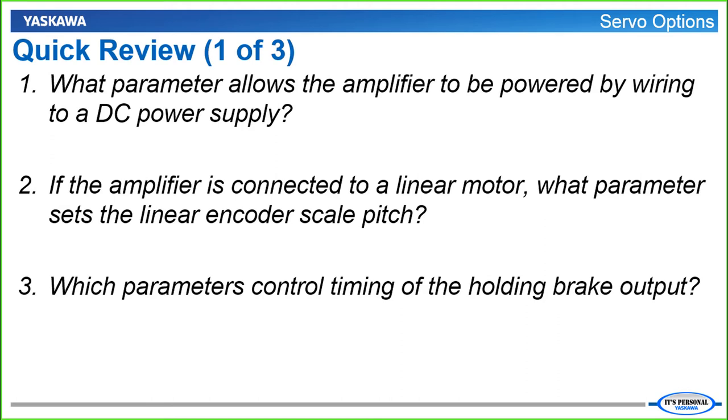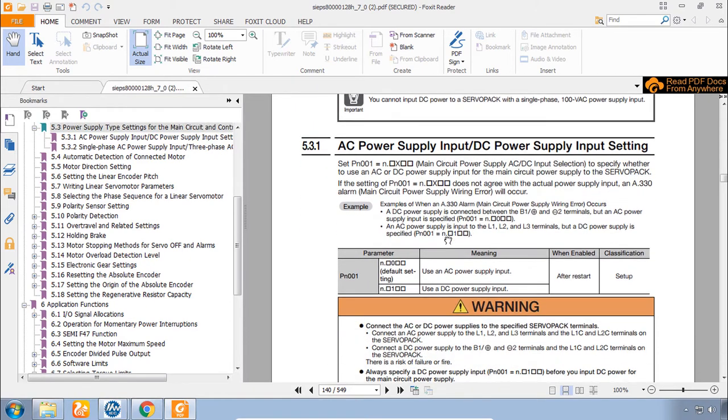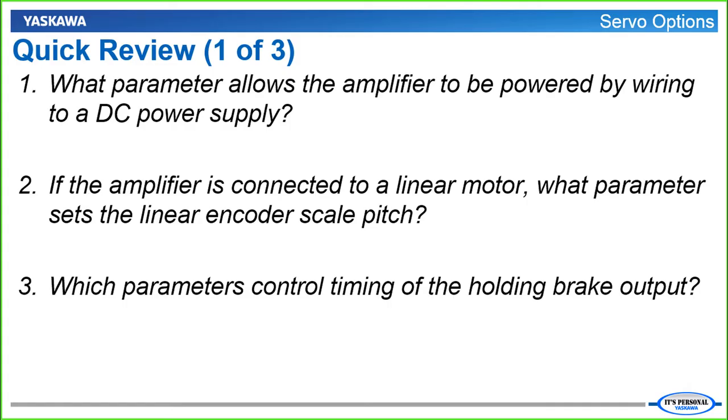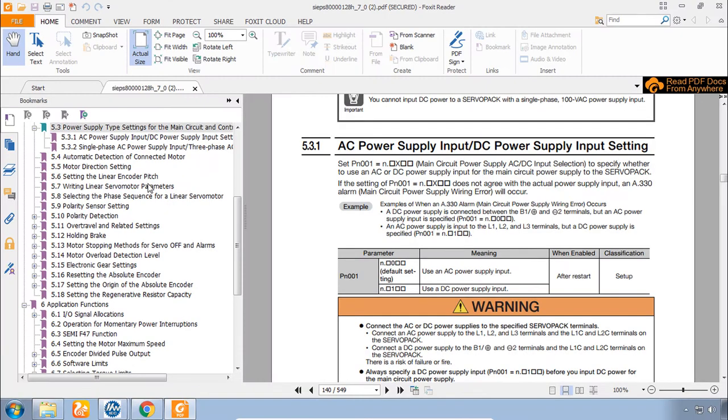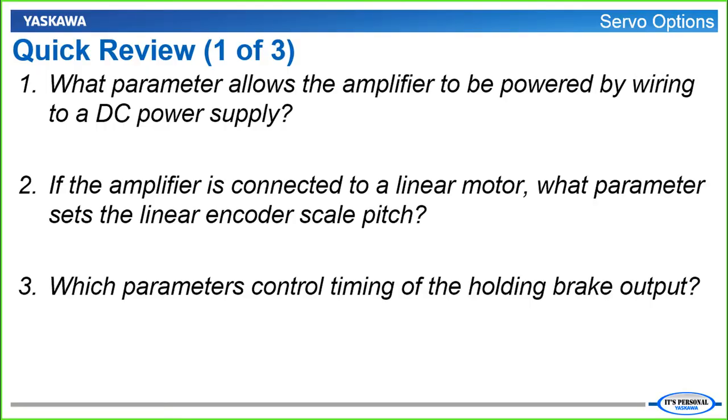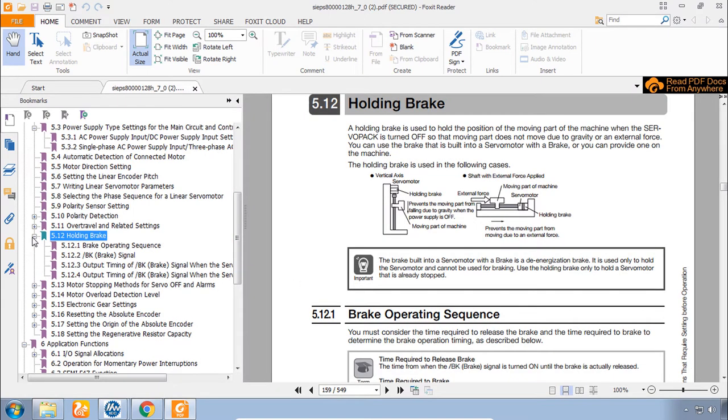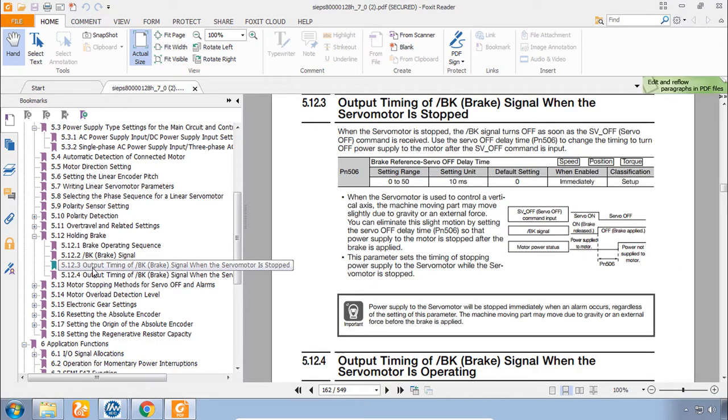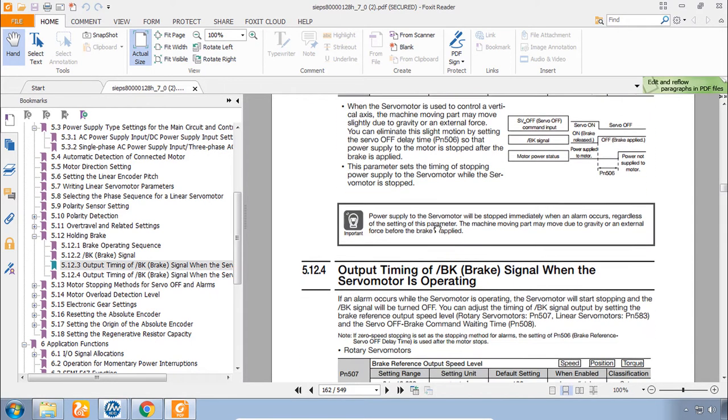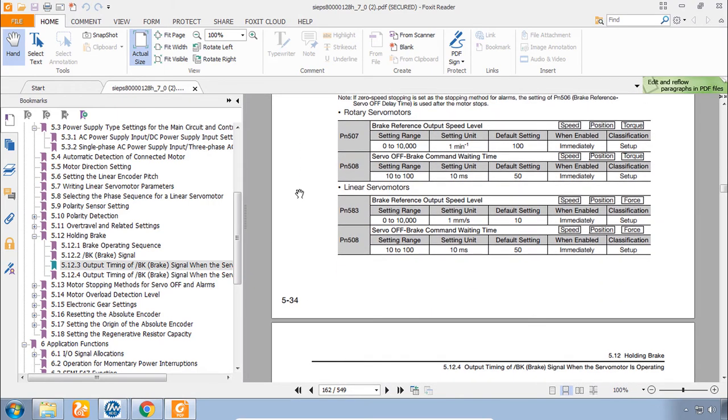Ok, parameter for DC power supply. That was in section 5.3. And the parameter is PN001. Question 2. Linear motor scale pitch. That was in section 5.6. Parameter PN282. And number 3. Timing of the holding brake. That was in section 5.12. And for holding brake you had to dig a little bit. And you see output timing. It's parameter 506. 507 and 508. And for linear motors there is a PN583.